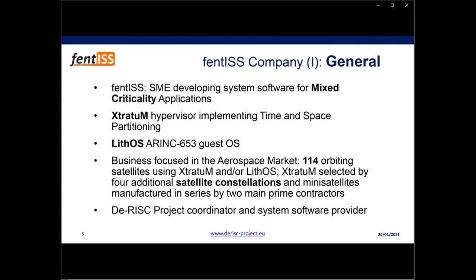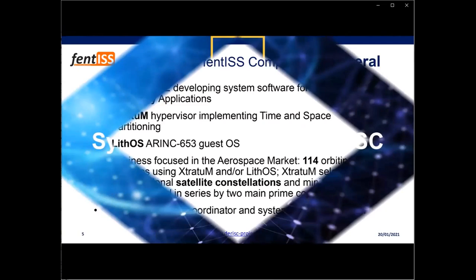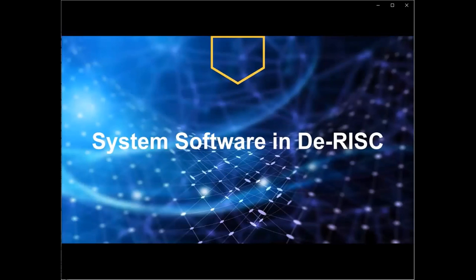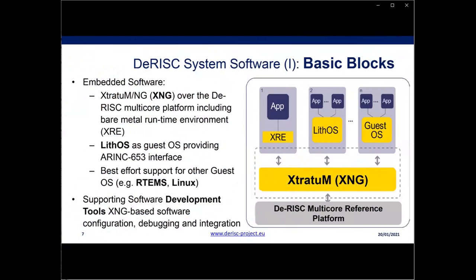Extratum has been selected by four additional satellite constellations and also by two main prime contractors who have decided to develop mini-satellite manufacturing series for future constellations. In D-RISK we play the role of coordinators and also system software provider. The system software has two parts: first, embedded software packages — the Extratum hypervisor provided for the RISC-V platform and an associated bare-metal runtime system we call XRE; second, software development tools that simplify application development.